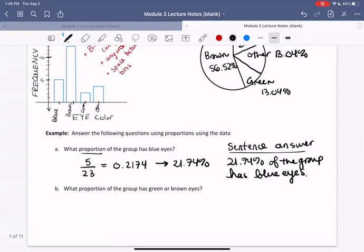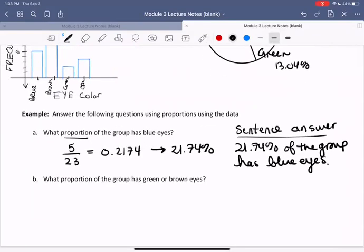All right. What about this last question? What proportion of the group has green or brown eyes? So take a moment to pause the video and write down an answer. And maybe not just write down the answer, but try to write down your thinking, write down what computations you'd make to find out the solution here.